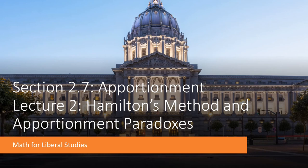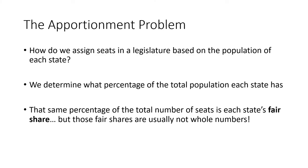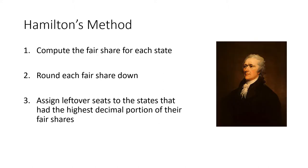This is the second video lecture for section 2.7 on apportionment. In this lecture, I'll be talking about Hamilton's method and apportionment paradoxes. We've talked about the apportionment problem in the previous lecture — the basic idea is figuring out how to assign seats in a legislature based on the population of each state. Hamilton's method gives us a way to figure out what whole number of seats to assign to each state.